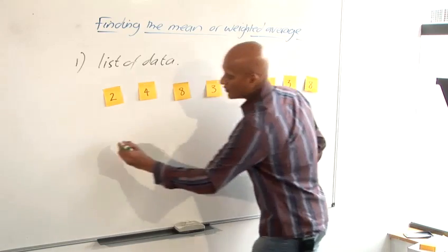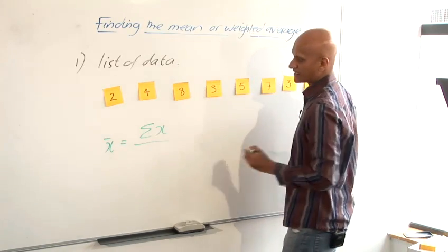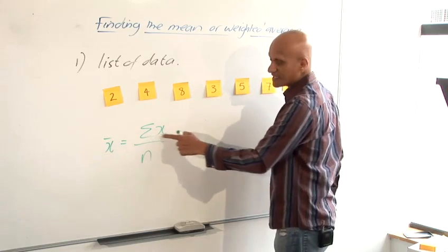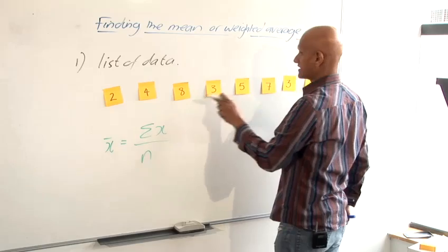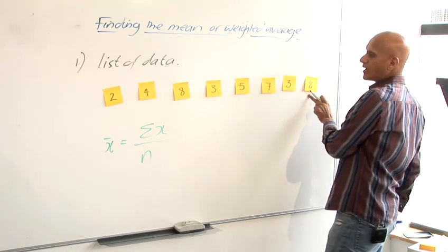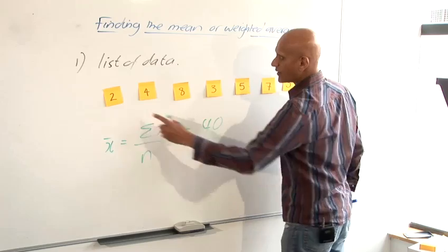The mean is called x bar and it's found by adding together all the values of x and then divided by n. So that sigma x means you have to add up all the values of x. So if you add up all these values of x, add them all up, you should get 40. And divided by n,